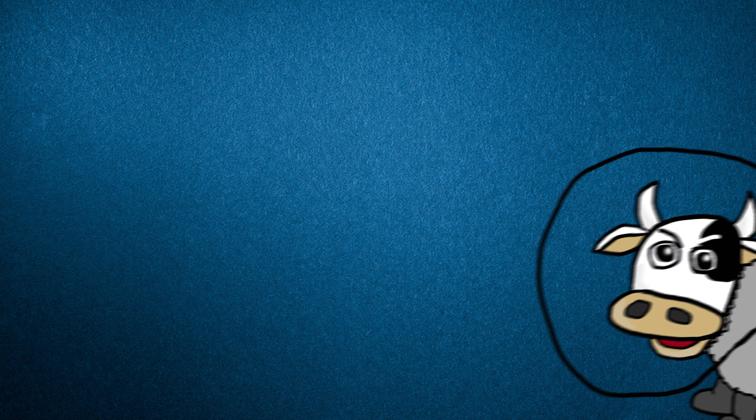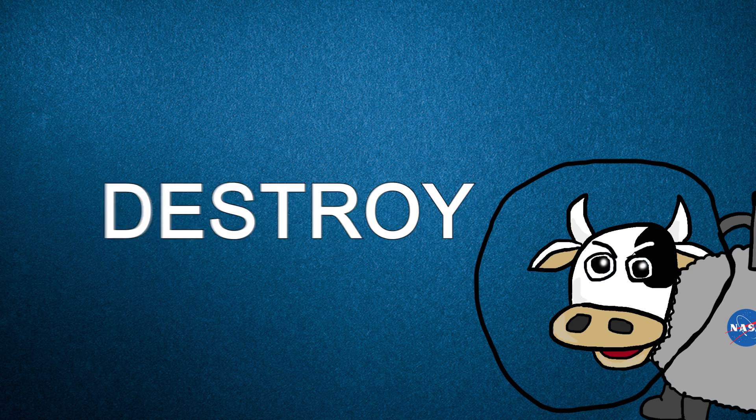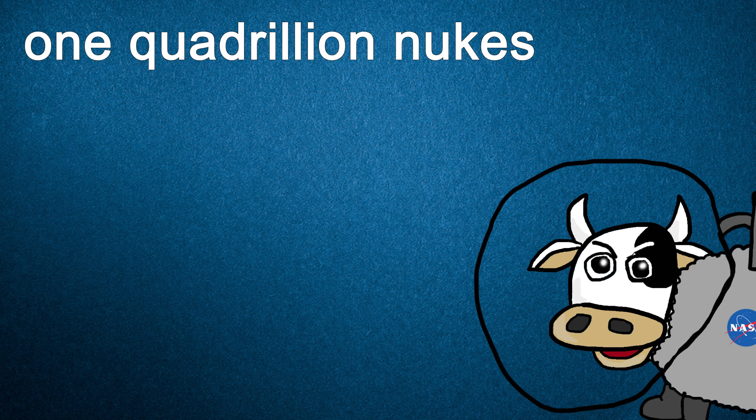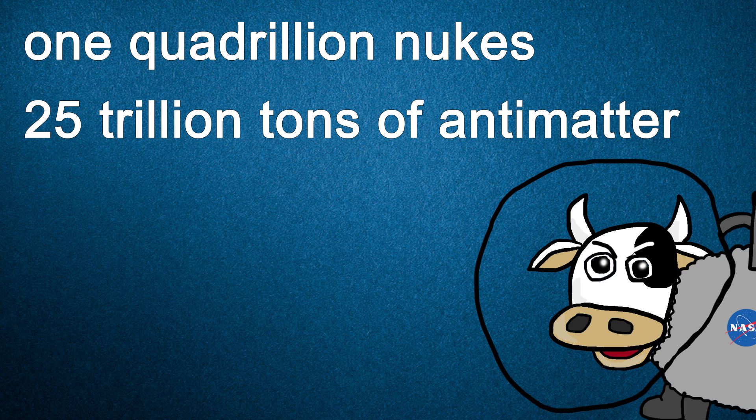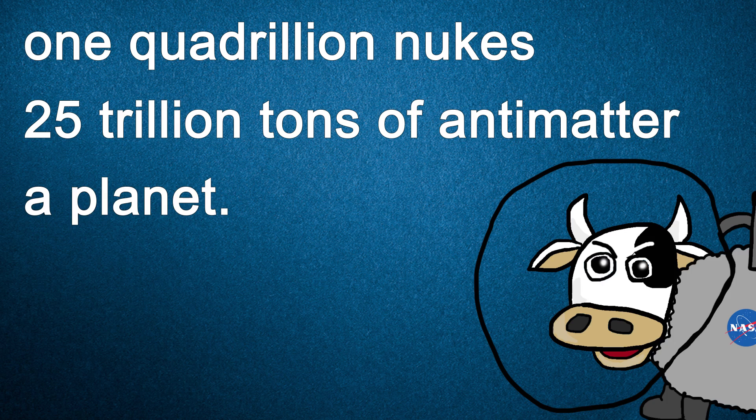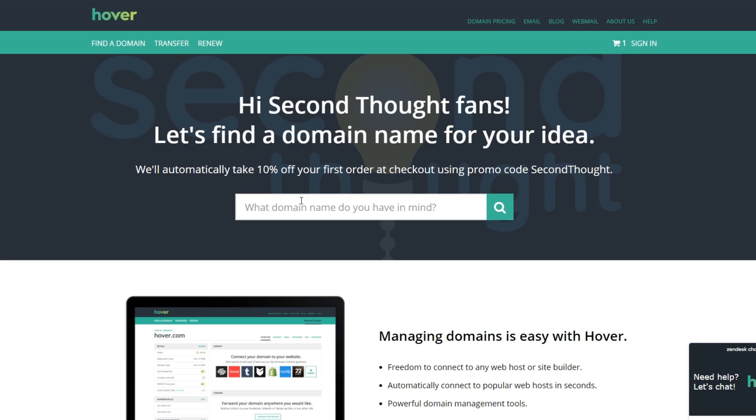So if you still want to tackle the massive challenge of annihilating the Earth, you've got your options. 1 quadrillion nuclear warheads, 25 trillion tons of antimatter, or a cosmic cannonball the size of Mars. Whatever you choose, it would be nice to give the humans of Earth a little warning, perhaps by creating a website with a fitting name like exploding.earth.